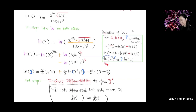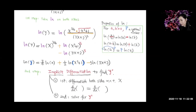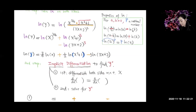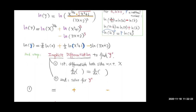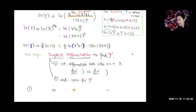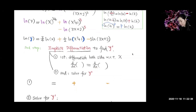The second step for logarithmic differentiation is to use implicit differentiation to find y prime. Remember, implicit differentiation has two steps: the first step is to differentiate both sides with respect to x, and the second step is to solve for y prime. Now let's differentiate both sides with respect to x.